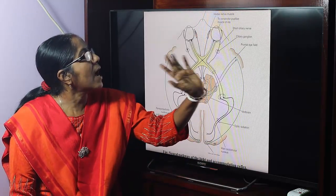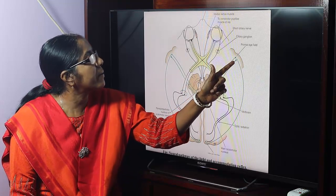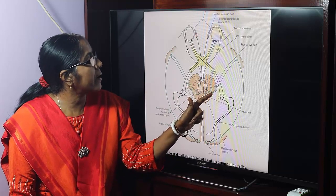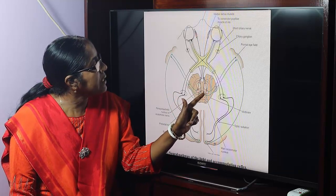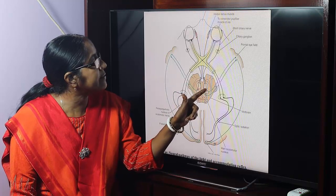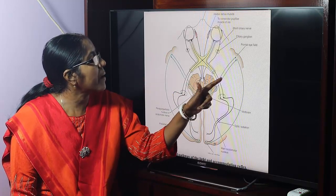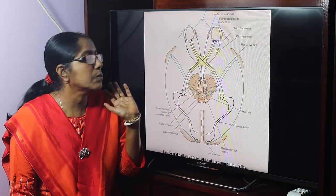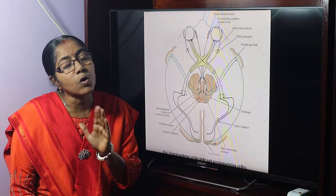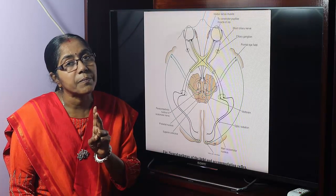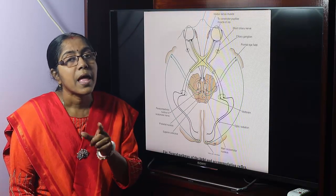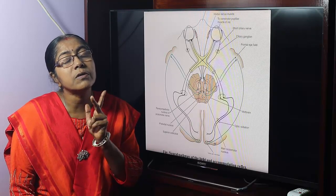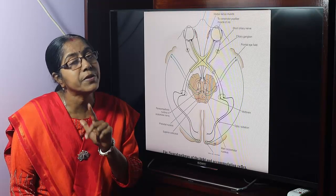The visual area is connected with the frontal eye field by the superior longitudinal fasciculus. From the frontal eye field, cortical fibers descend through the internal capsule. Some fibers synapse with the Edinger-Westphal nucleus of the oculomotor nerve, and some fibers synapse with the main motor nucleus of the oculomotor nerve. The oculomotor nerve is a purely motor nerve and has two nuclei: the main motor nucleus and the parasympathetic nucleus, also termed the Edinger-Westphal nucleus.